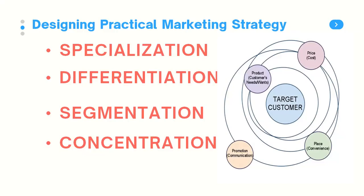Now let's talk about designing a practical marketing strategy. To design a practical marketing strategy you need to understand the seven Ps — we'll go through them again in a later module. Having seen what they are, you're going to use them to design your practical marketing strategy. Zero in and say: what are we specializing in? What is our company known for? Don't be too broad that people don't know what you are doing.